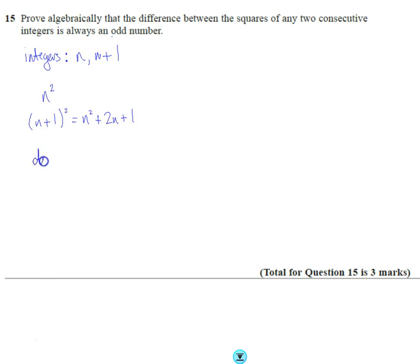So the difference between these two things, the difference between these two is if you subtract all the n squared, it's going to disappear, so you're left with 2n plus 1, and you just need a sentence this is always odd, and there's our proof finished.